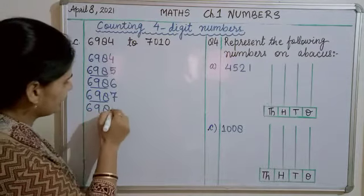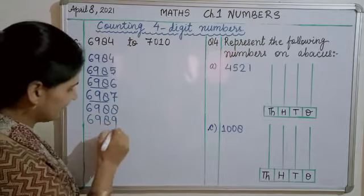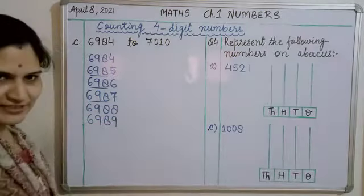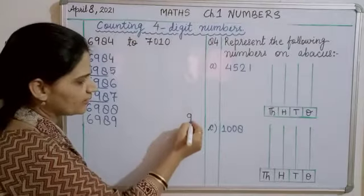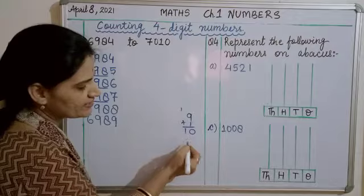Six thousand nine hundred eighty eight. Six thousand nine hundred eighty nine. Chab bhi nine hae ka bata. Tho nine plus one ho ta hai ten. Ye ho jae ka. Nine plus one is ten.